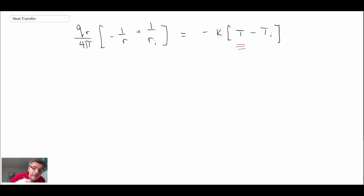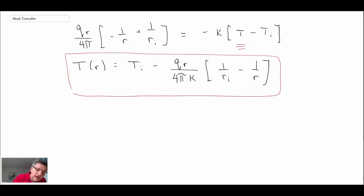So we rearrange this, and we can come up with the following expression. And we get this relationship. Now, like before, we have not finally solved everything. So we still have that heat flux in there. How are we going to get that?